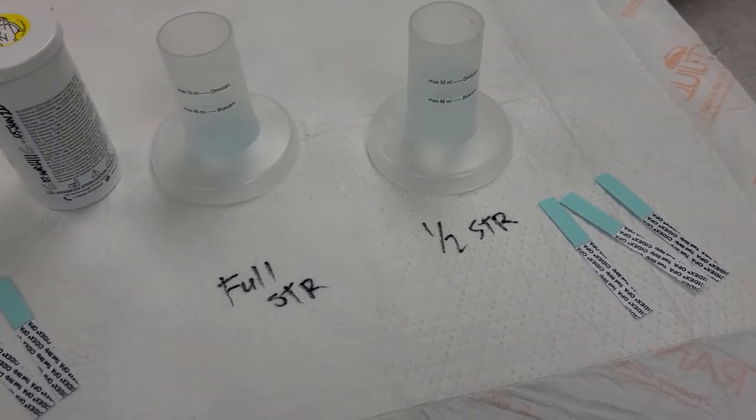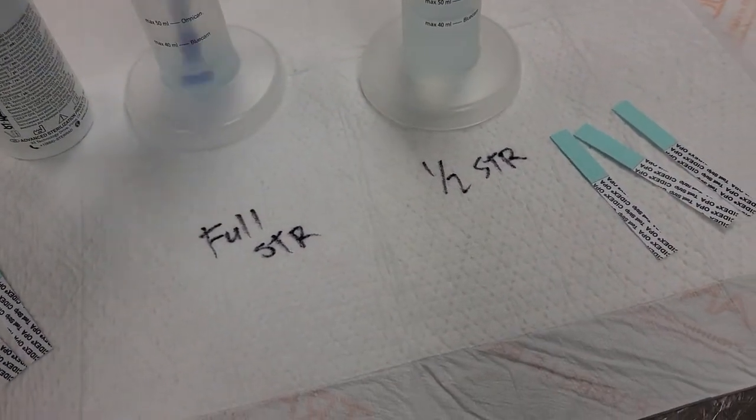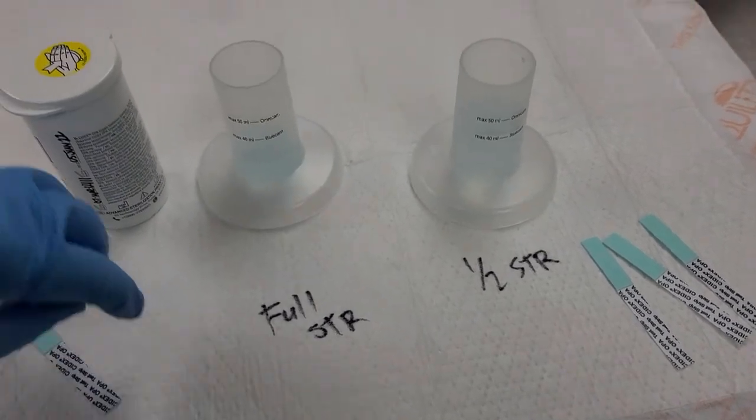Then you're going to take three strips from the Cydex OPA test bottle and you're going to dip each one into its respective container.